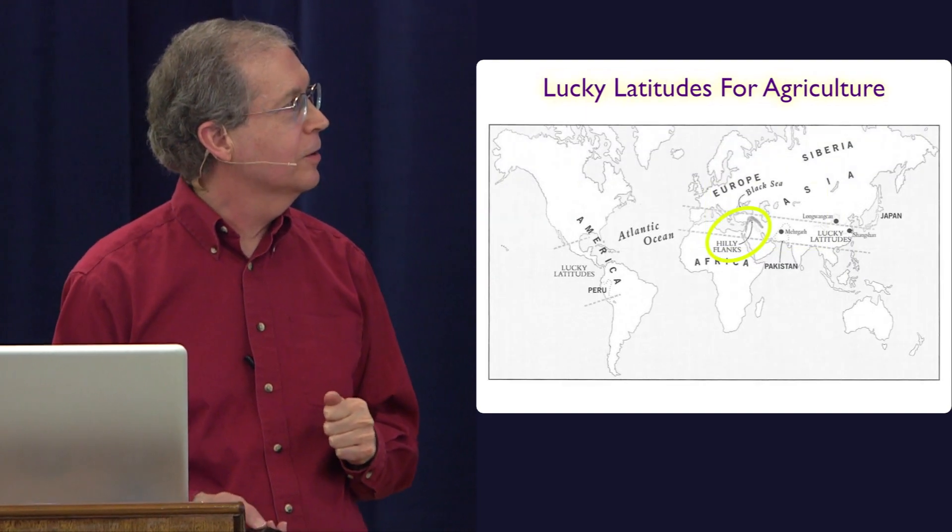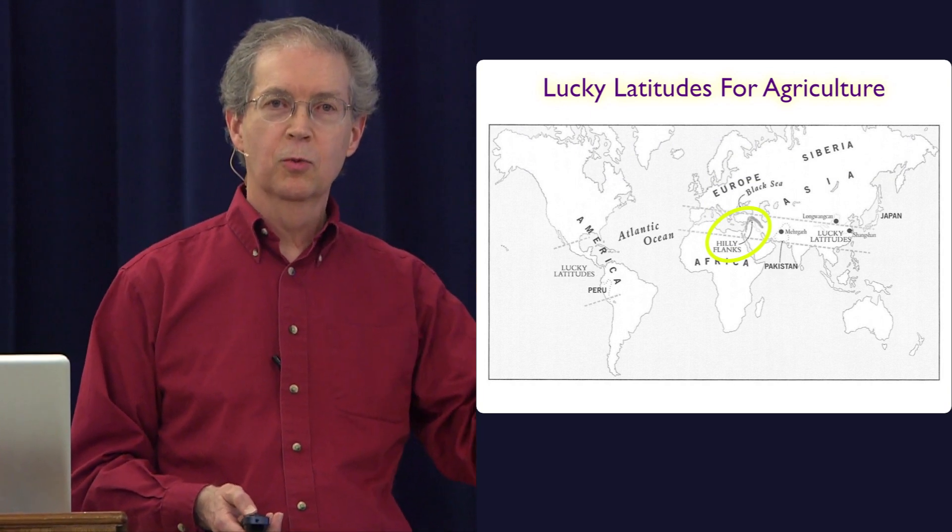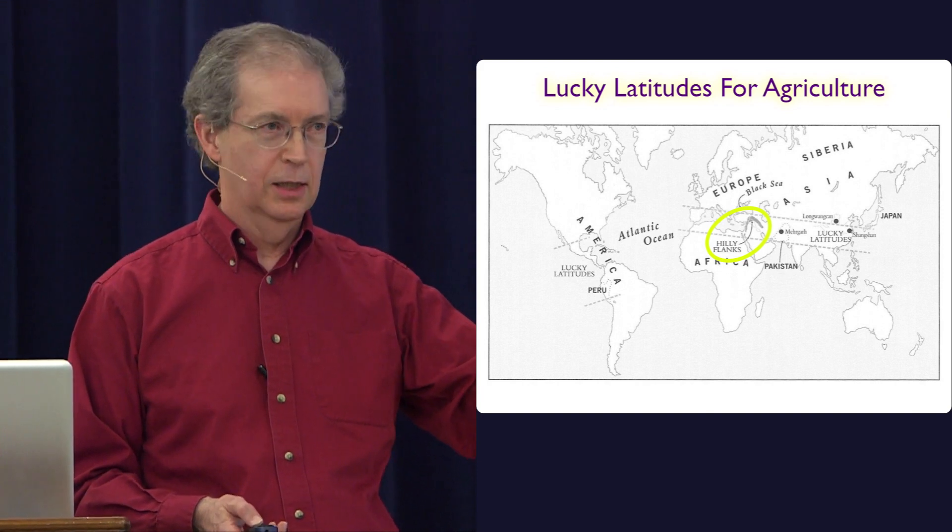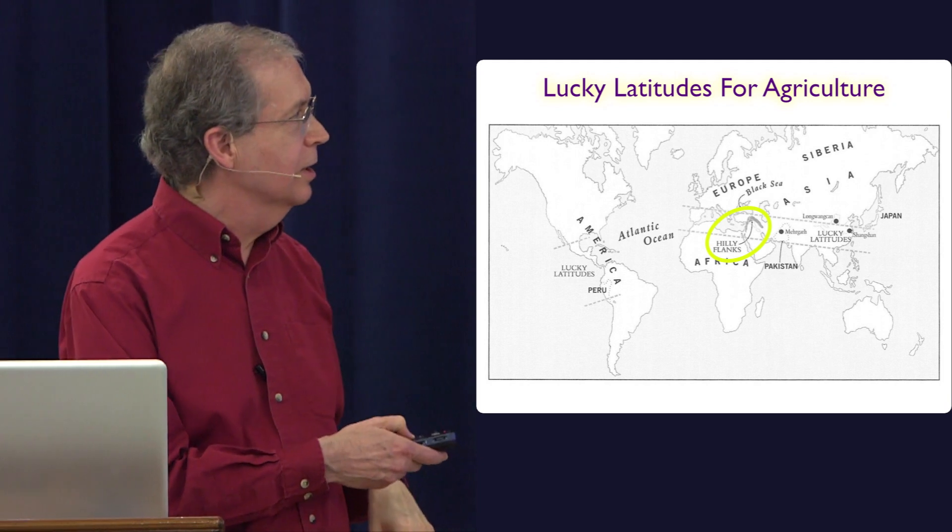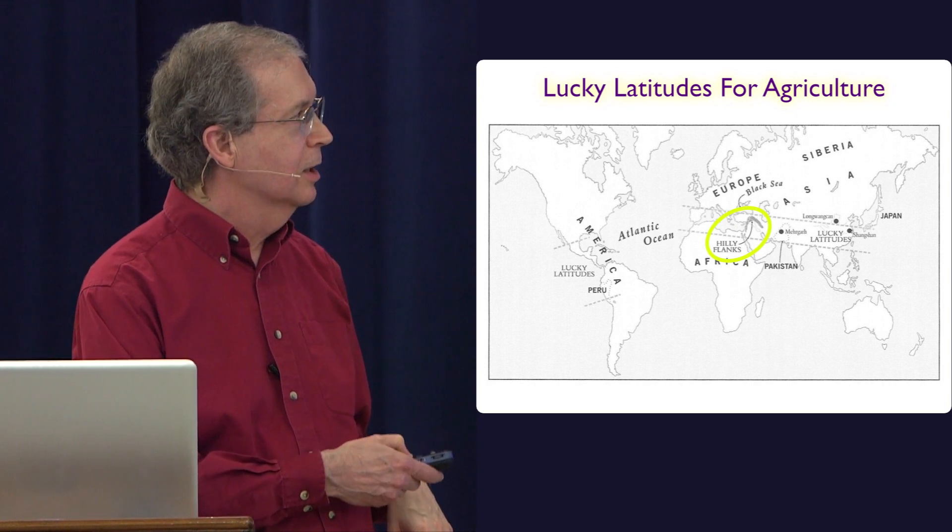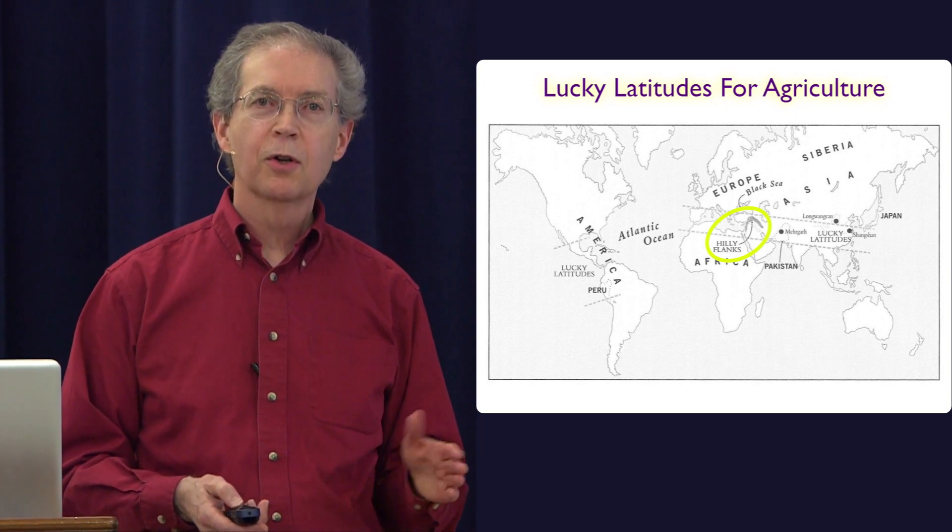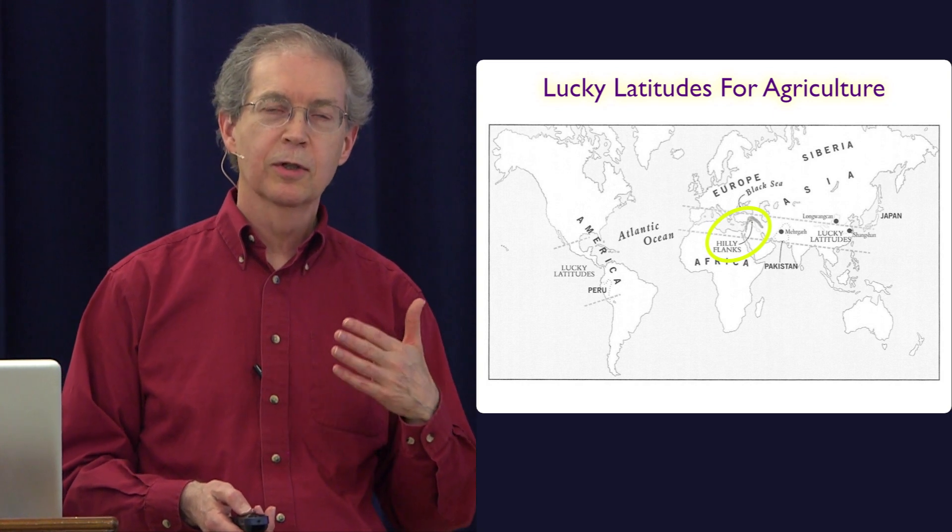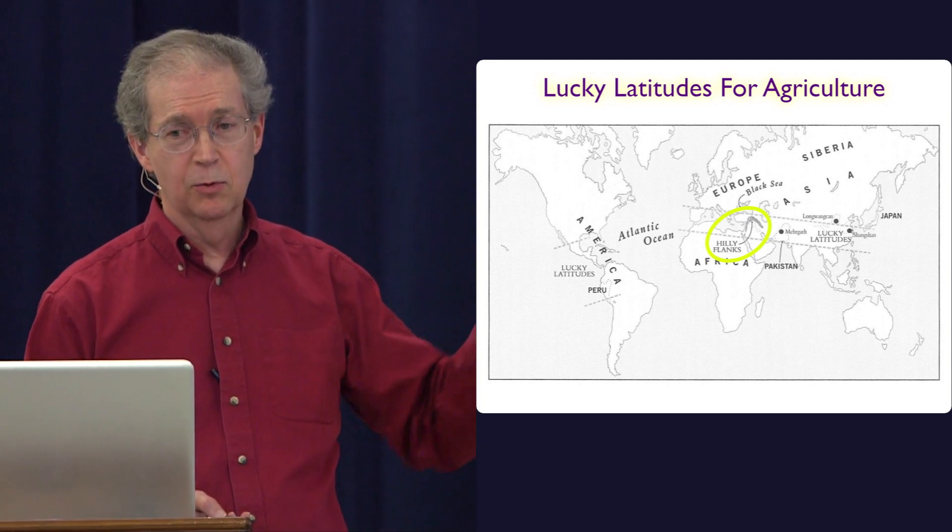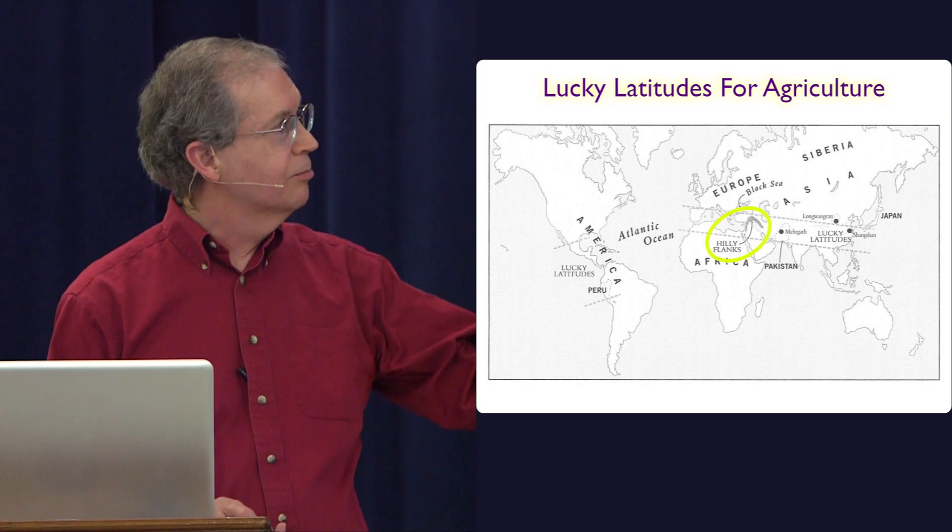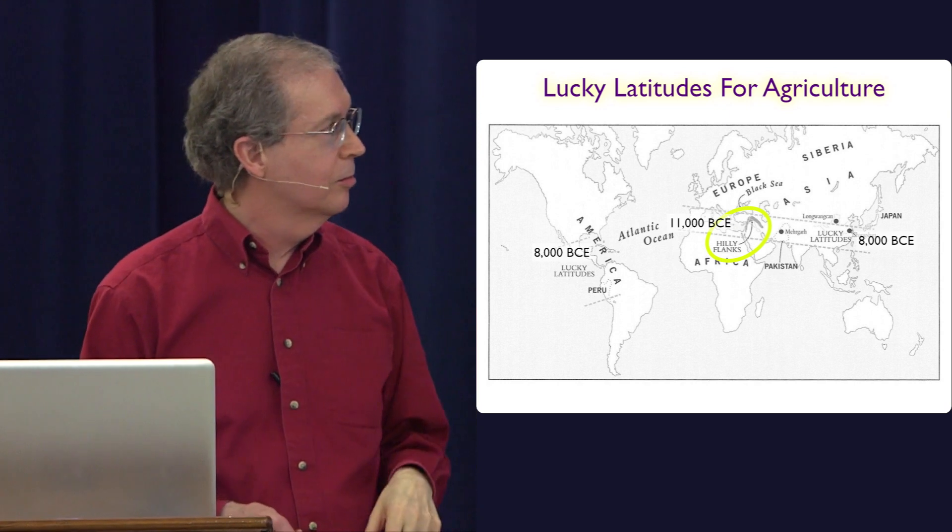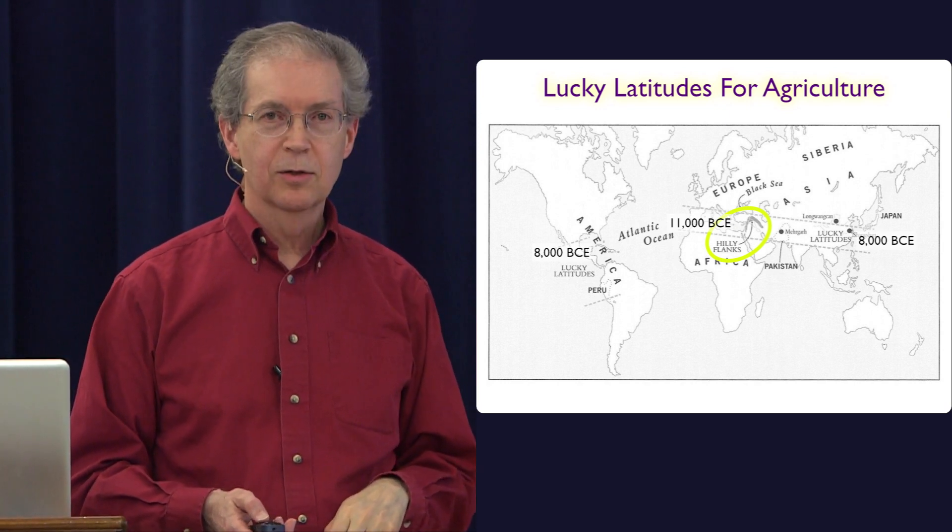For this, it's helpful to understand that there were certain parts of the world that had a lot of potentially domesticatable species. They had readiness, and those areas, particularly this area in the Middle East called the hilly flanks, but also over here in what's now China and in Middle America, almost all of the domesticated species, their earlier precursors were in those areas. So that's where the readiness was, and hilly flanks, you first get it in 11,000 BCE, and then China and the Middle America around 8,000 BCE.